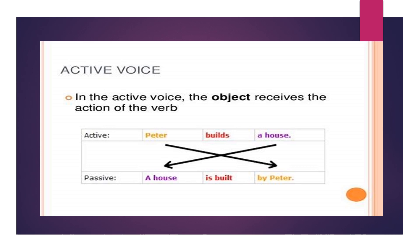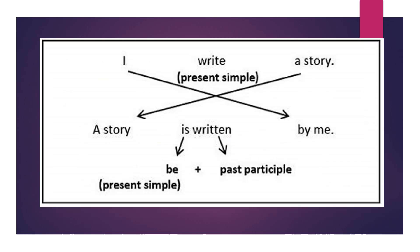So if I have this example: 'Peter builds a house,' I have to begin with 'house,' so I'll say 'A house is built by Peter.' Also, I have another example: 'I write a story,' so I'll begin with 'a story' and say 'A story is written by me.'